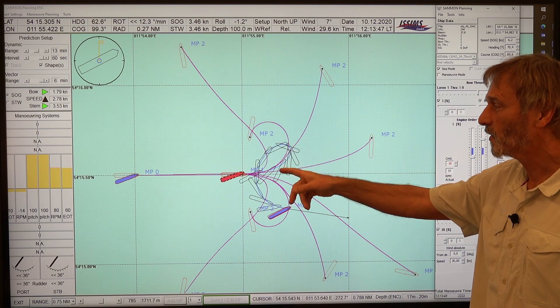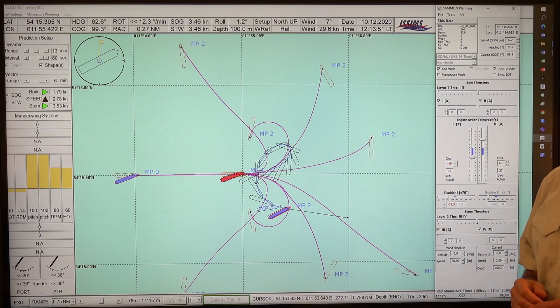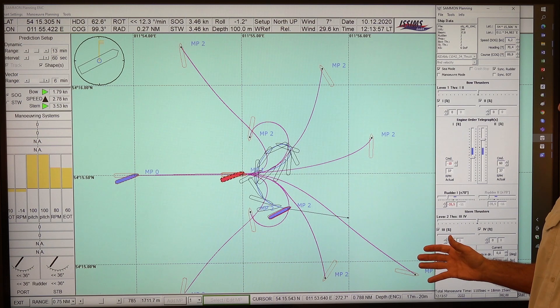So either increasing the engine to kick ahead or if you don't want to accelerate the vessel, then you could split the engine as I did here. And then you see, it's nearly compared in the beginning, very close to the turning circle with no wind.